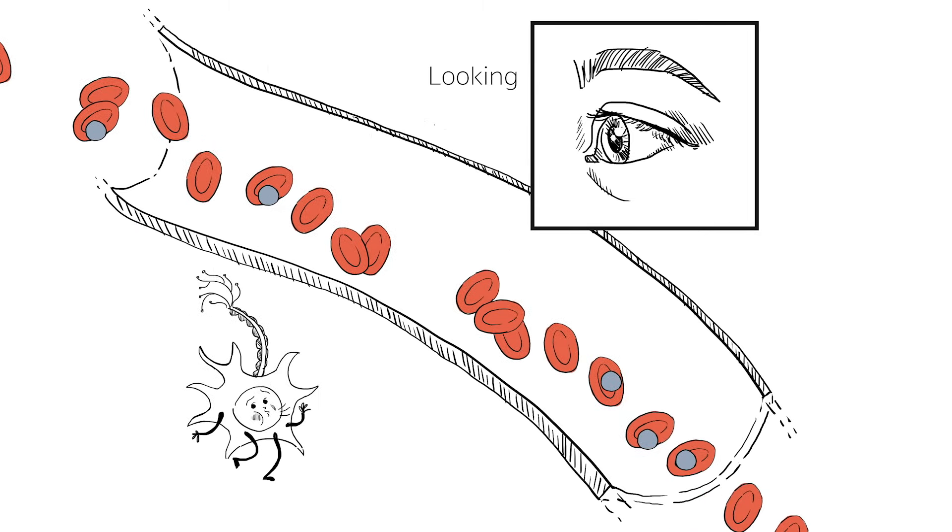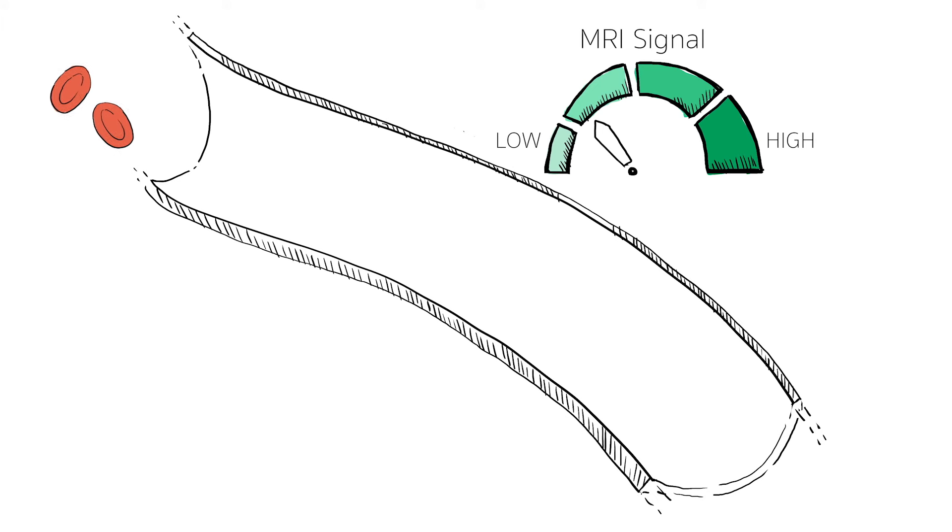Blood has magnetic properties. These properties change depending on how much oxygen it contains. When there's a change in the oxygen level, the magnetic field around the blood vessel changes slightly. This affects the protons close to the blood vessel in a way that we can measure with the MRI scanner.